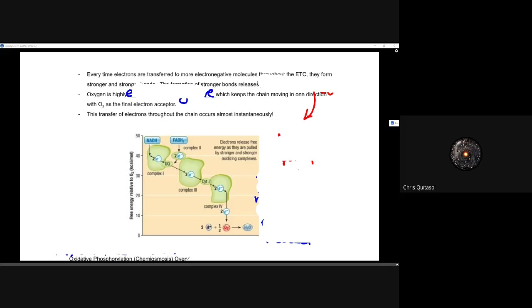So every time electrons are transferred to more electronegative molecules throughout that ETC, that electron transport chain, they have stronger and stronger electrochemical bonds, right? So the formation of stronger bonds releases that free energy for use later.